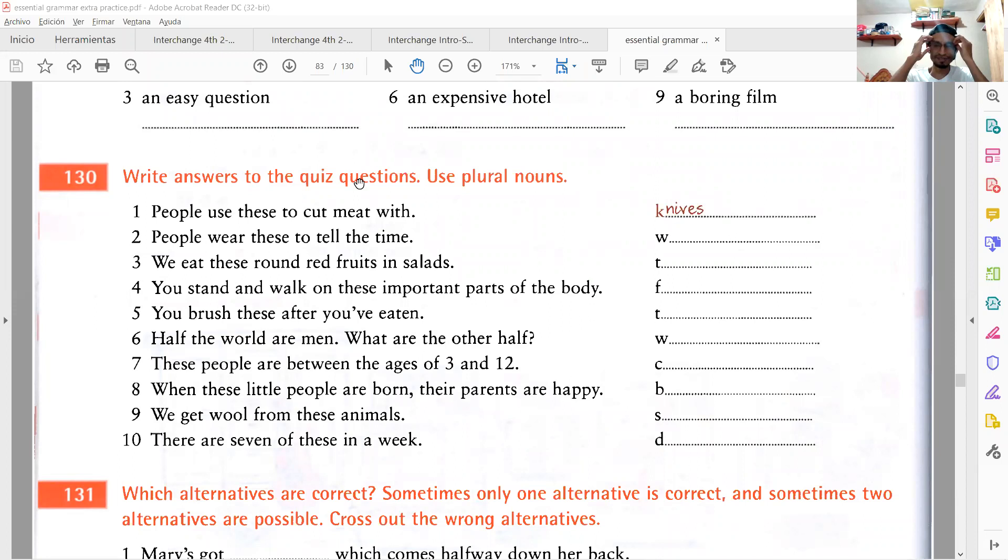Ya llegué aquí donde quería ver singular and plural. Vamos a hacer este trabajo. Ponte lista, get ready pues. Dice right answers to the quiz questions, es un quiz así rápido. Imagínate que estás concursando por un superpremium y te estoy atendiendo por teléfono. Dice right answers to the quiz questions, use plural nouns. Dice que trabajes los plurales nada más.